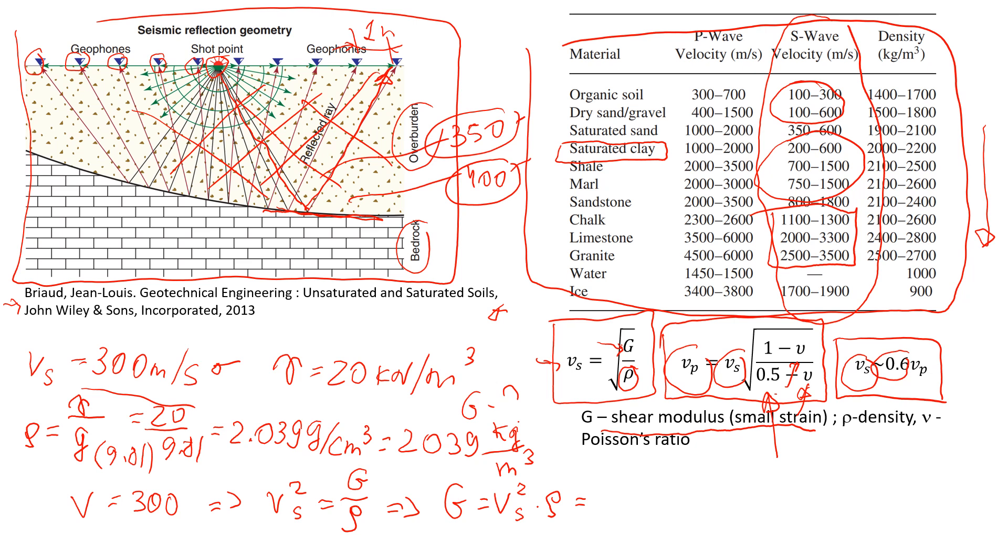So velocity is 300 in the power of 2. And we're going to multiply by density 2039. And that will give us a value of, well, already changed to MPa. It's going to be 183.5 MPa megapascals. So first, you're going to get a value in Pascals. And then you just change to MPa because that's the units we typically use for very hard rock or soil.